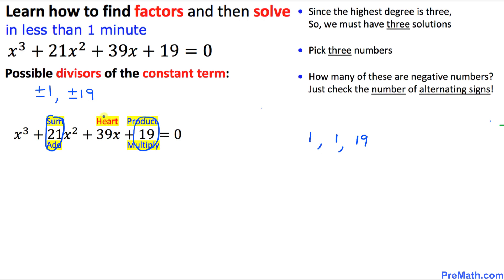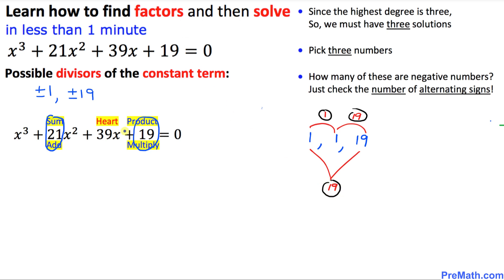As far as the 'heart' check is concerned, let's multiply the end numbers: 1 times 19 is 19, then 1 times 1 is 1, and 1 times 19 is 19. Adding those three results: 1 plus 19 plus 19 gives us 39. I call it 'heart' because the shape of the calculation looks like a heart.